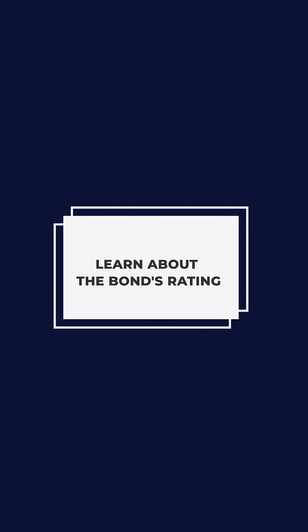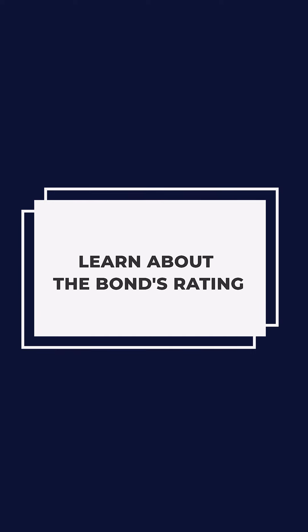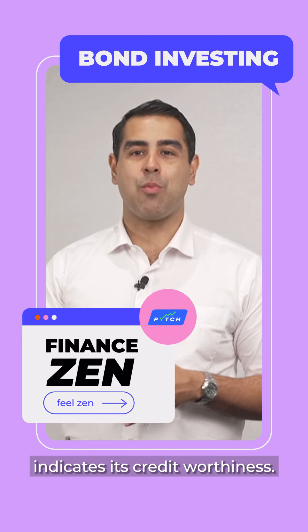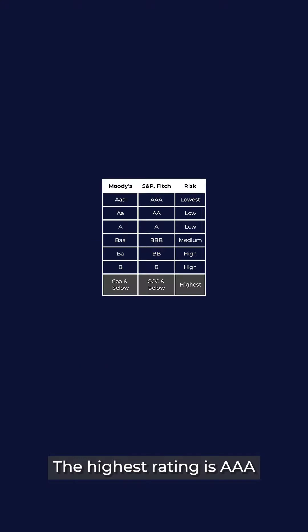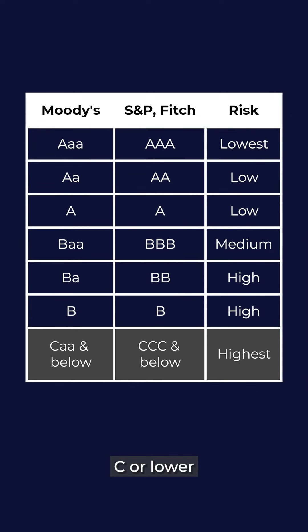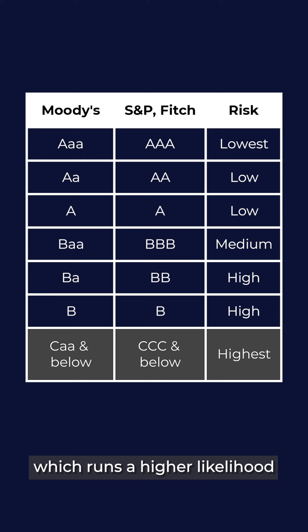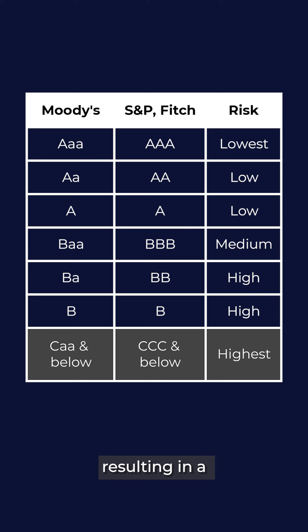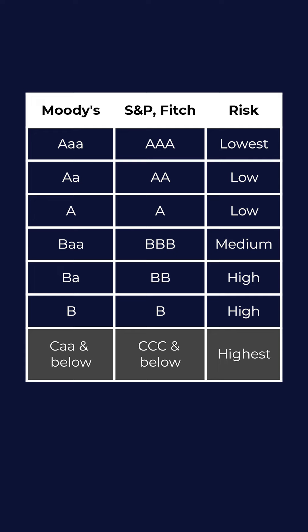Learn about the bond's rating. A bond's rating indicates its creditworthiness. The highest rating is AAA, while anything that is C or lower is considered high risk, which runs a higher likelihood of defaulting, potentially resulting in a loss of investment.